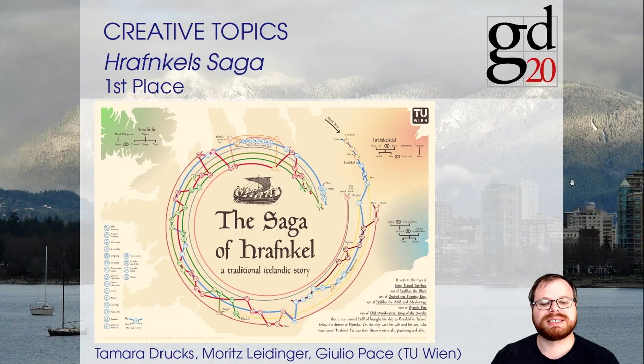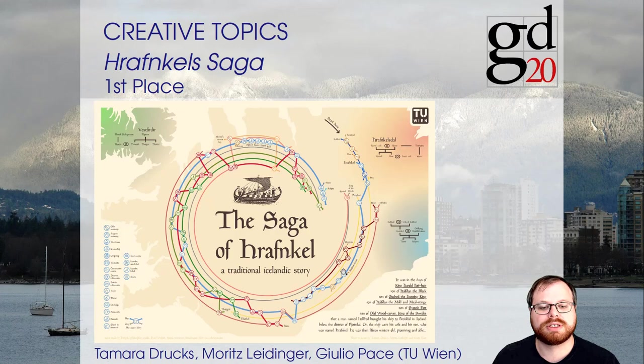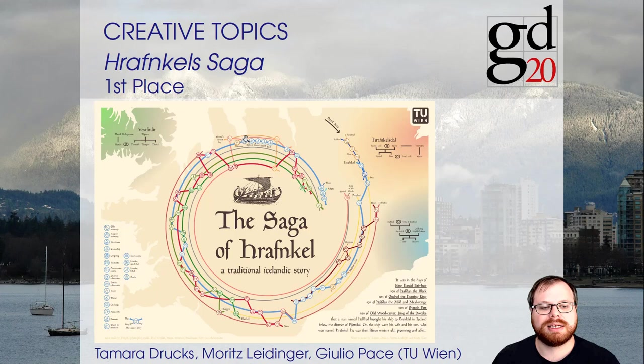In first place, we have a submission by Tamara Drucks, Moritz Leidinger, and Julio Paschinger from TU Vienna. It's a kind of circular layout but not really a circle — it's a spiral — which really adds a lot to the drawing. You can follow from the beginning along the colored arcs, where every color represents one character, with icons showing the interactions. It's just very nice to follow a character and see all their interactions. Thank you for your nice submissions and congratulations.